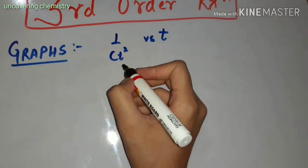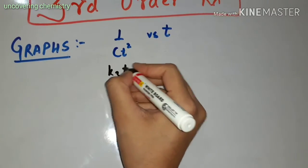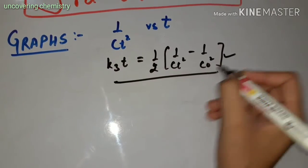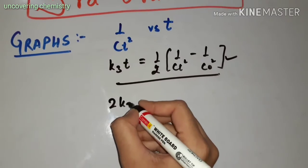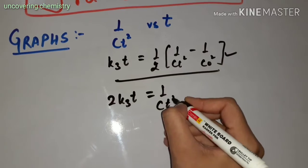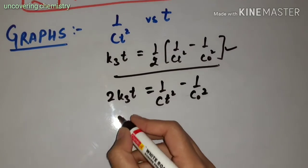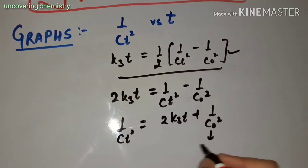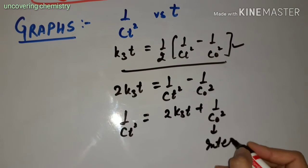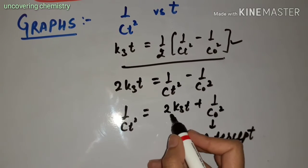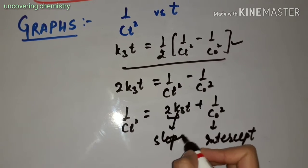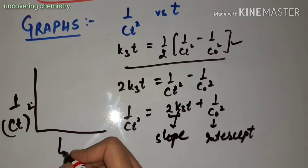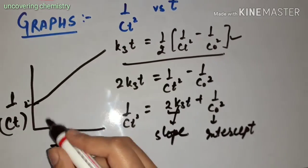Next comes the graphical representation for the third order reaction. The first graph is between 1 upon CT squared versus time. The equation is K3T equals 1/2 times (1 upon CT² minus 1 upon C-naught²), which rearranges to: 1 upon CT² equals 2K3T plus 1 upon C-naught². This is the straight-line equation where the intercept is 1/C-naught² and the slope is positive.